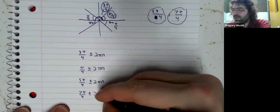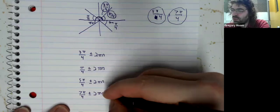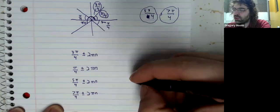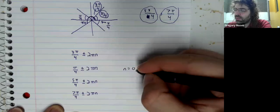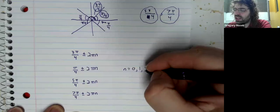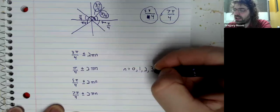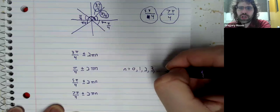And if we want to make sure we're not misunderstood, we can explicitly say that n is a natural number.